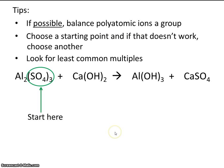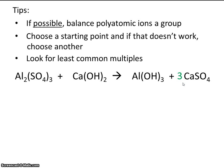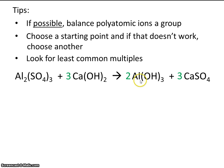So let's pick a place to start — just randomly selected sulfate. We have three sulfates here on the left, so that means we need three sulfates on the right. Let's place a coefficient of three over here. That made three calciums on the right, which means we're going to need three calciums here on the left. Making three calciums also made six hydroxides — we're multiplying three times two. So now we have six hydroxides on the left. What number do I have to put here to make six hydroxides? That's right, two. And we have two aluminums on the right, and we also already have two aluminums on the left. So this reaction is also balanced.